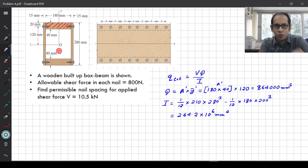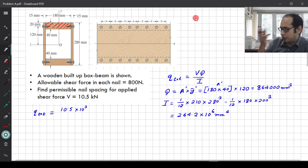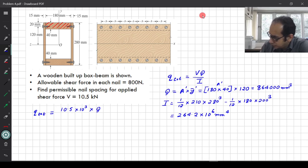Now that we have these quantities over here, let us calculate the Q total. The Q total is going to be what is the Q total will be equals to the V is given 10.5. It is 10.5 times 10 cube. I am calculating in your Newton and mm and so on times the Q that we calculated which is this guy over here divided by I which is this guy over here. Now, if you plug that in, you will get the Q total comes out as 34.3 Newton per mm.